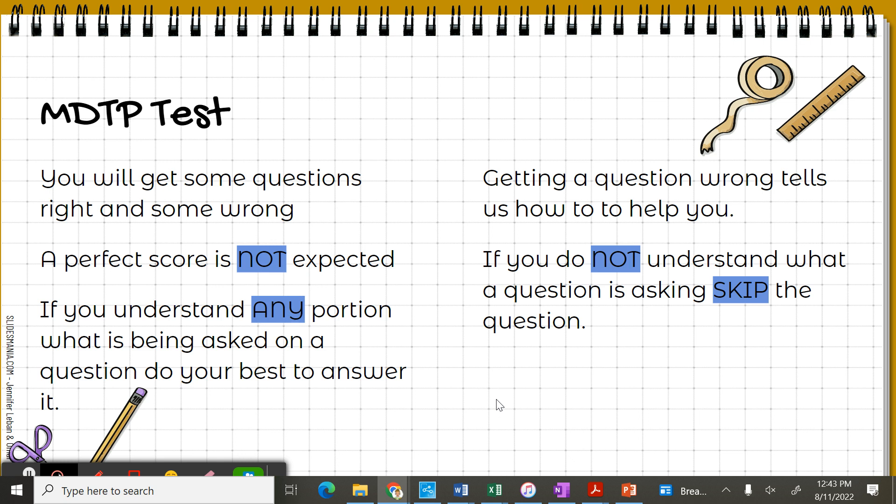If you see a question and you think you understand any portion of it, try the question. Even if you get that question wrong, it still gives me information on how to help you. If you do not understand a question, don't just bubble an answer. Skip it. Because if the whole class skips, I know, and it's something we need for Algebra 2, I know, oh, I got to cover that. Make sense? So are we guessing tomorrow? No. Either try it or skip it.